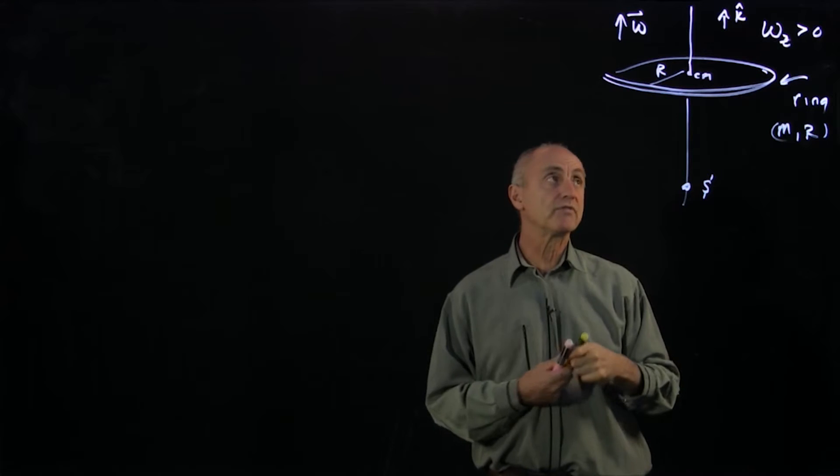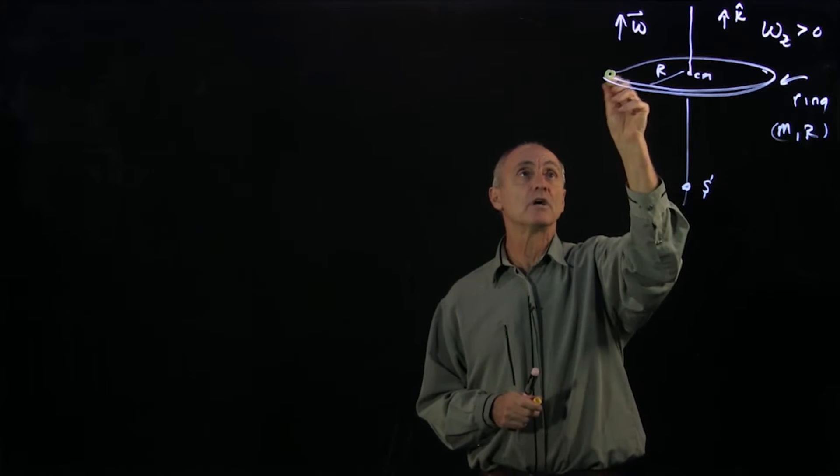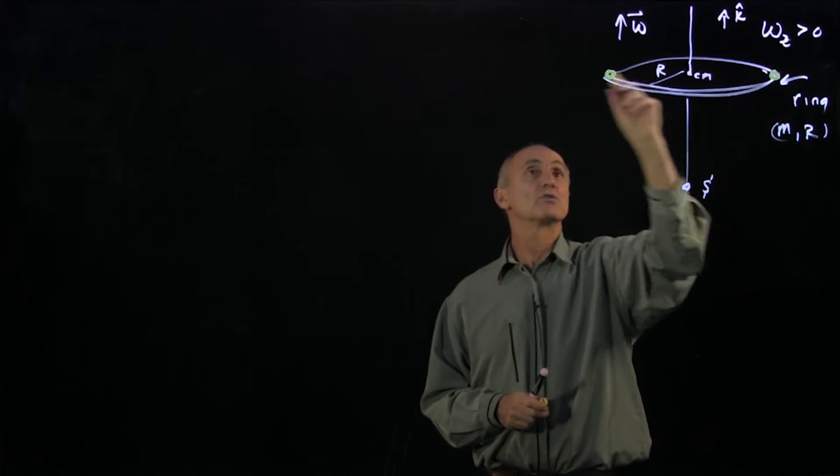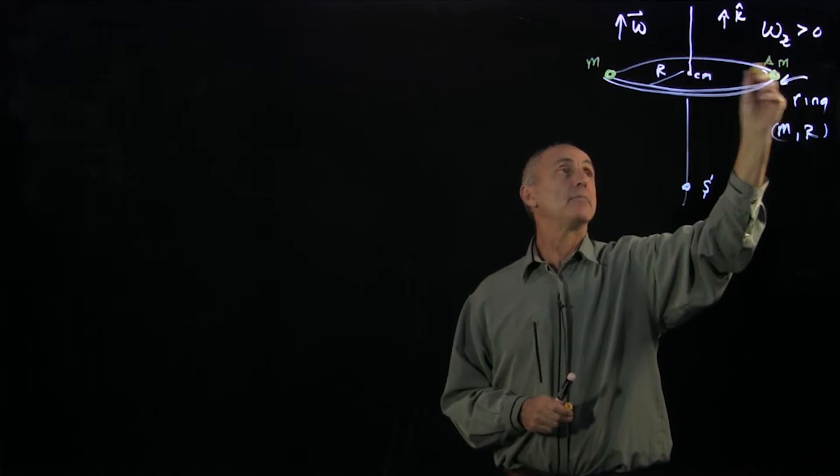The way we'll do this is we'll divide our ring up into pairs of symmetric objects. So we have a delta m here and a little delta m there.